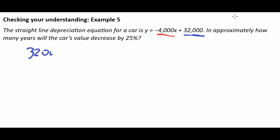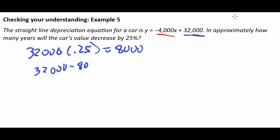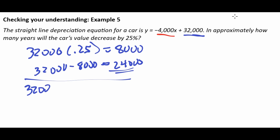There are two ways to find the value after losing 25%. First, we can take $32,000 and multiply by 0.25 to get $8,000, then subtract from $32,000 to get $24,000. Alternatively, if we're losing 25% of the value, we have 75% left. So we can just do 32,000 times 0.75, which also gives us $24,000. Either method works — use whichever makes more sense to you.